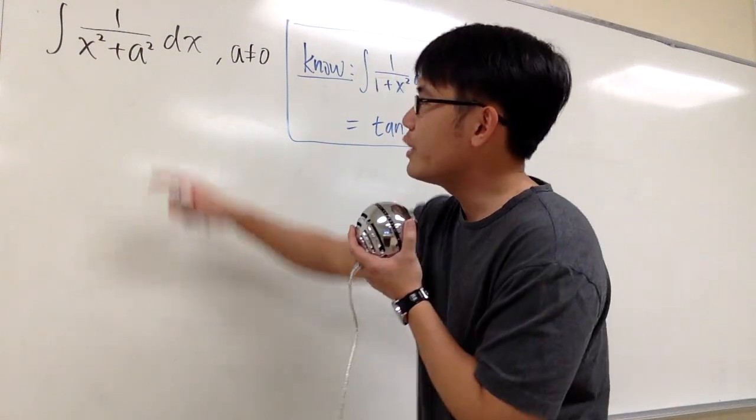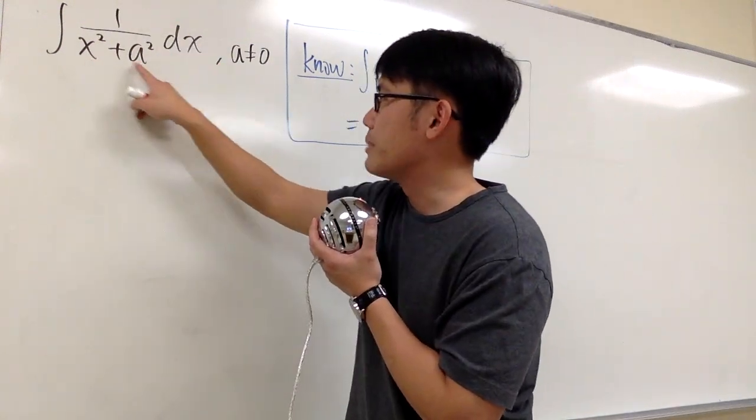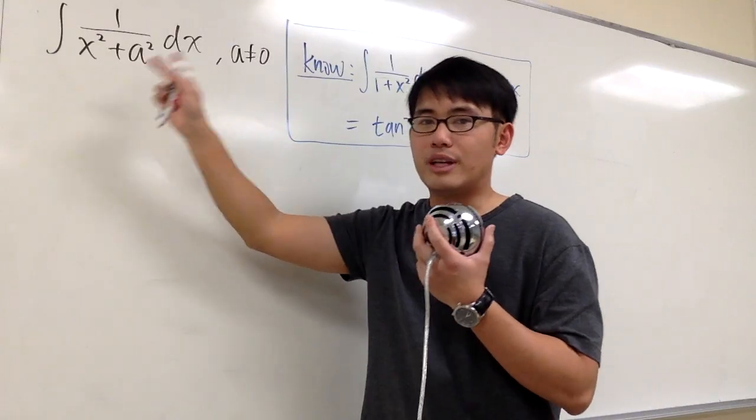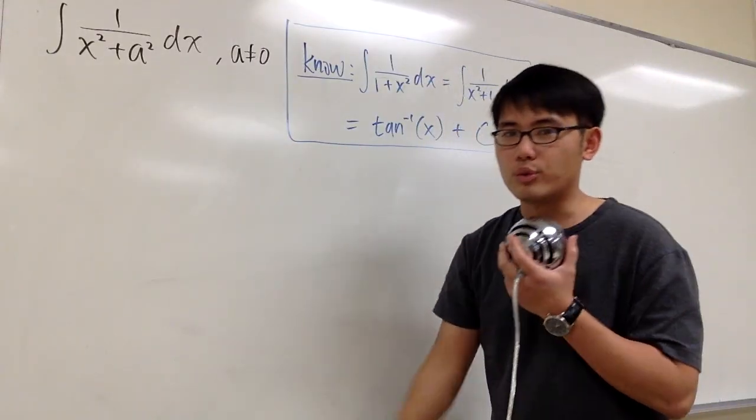We are going to come up with a formula for the integral of 1 over x squared plus a squared dx. And of course, we don't want a to be 0, otherwise we get just 1 over x squared, we can just do the power rule for that.